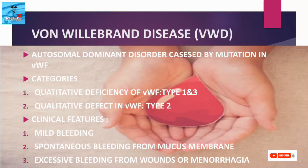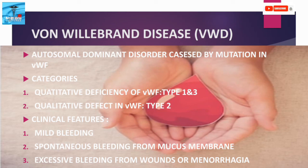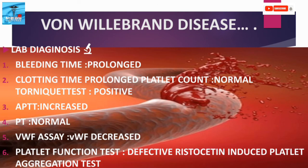Clinical features include mild bleeding, spontaneous bleeding from mucous membranes such as epistaxis, excessive bleeding from wounds, and menorrhagia. In lab diagnosis, bleeding time is prolonged and clotting time is prolonged, but platelet count remains normal. The tourniquet test gives positive results and activated partial thromboplastin time is increased, but prothrombin time is normal. Von Willebrand assay detects a decrease in Von Willebrand factor. The ristocetin-induced platelet aggregation test is diagnostic for Von Willebrand disease.